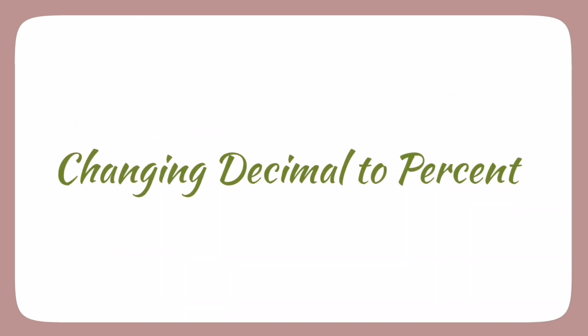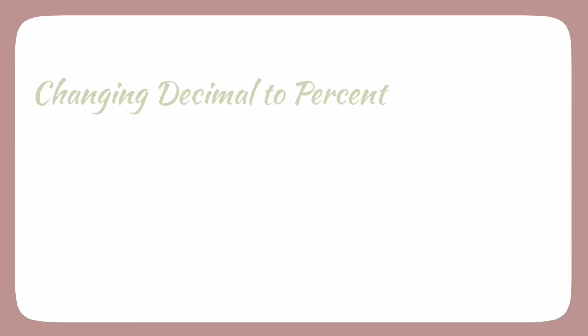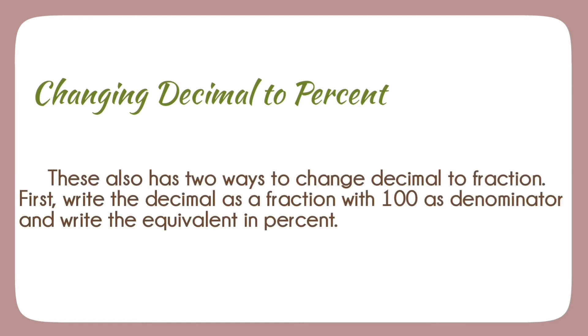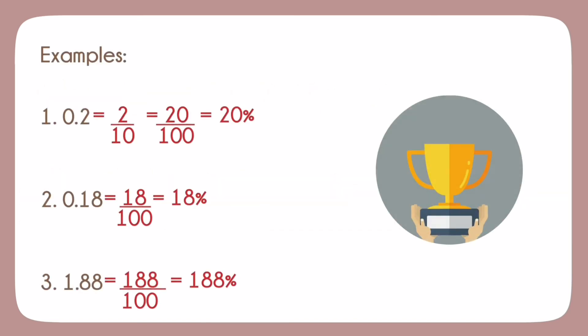Next, changing decimal to percent. This also has two ways to change a decimal to percent. First, write the decimal as a fraction with 100 as denominator and write the equivalent in percent. Examples. On the first example when the decimal is written into fraction, it is 2 over 10. Why is the denominator 10? It is because when it is in the decimal form, 2 is in the 10th place, and it is then changed into the denominator of 100. The example number 2 and 3 have the denominator 100 when written into fraction because when they are in decimal form, they are in the 100th place.